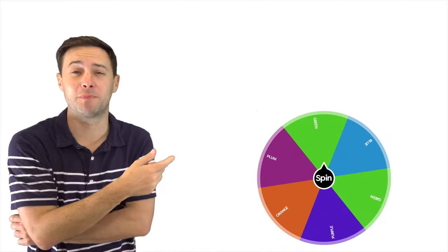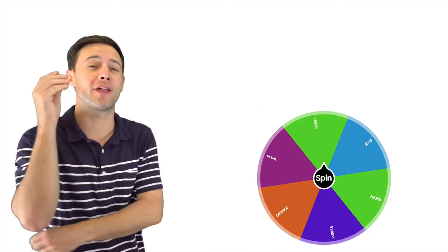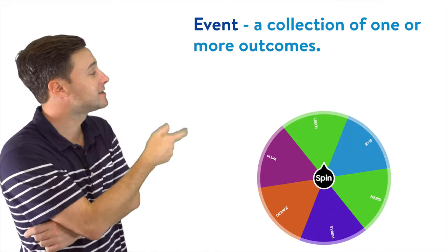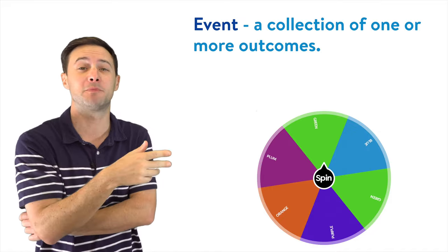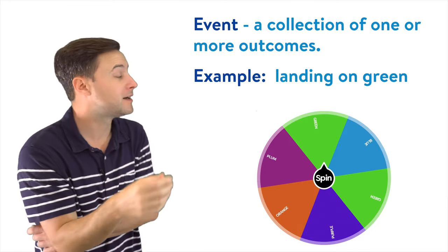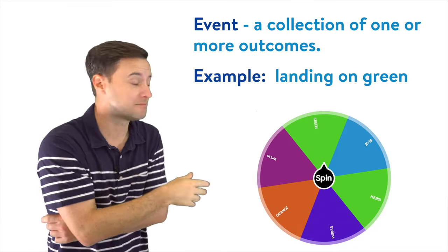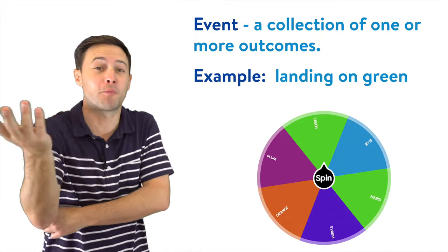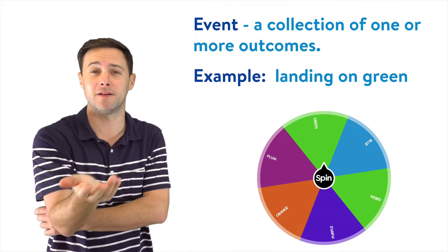Next, if we are spinning the spinner, we are trying to get a specific color, hopefully. And when we pick a specific outcome, either one or more outcomes, we call that an event. So in this situation, if I was spinning the spinner and trying to get a green, landing on green would be the event. If I was trying to get a purple, landing on purple would be the event.